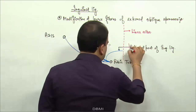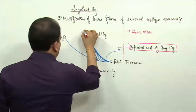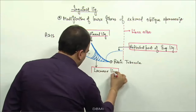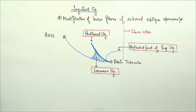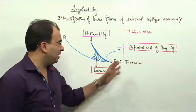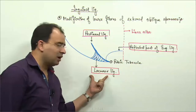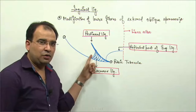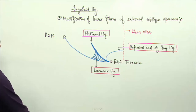So the three modifications we can appreciate are: the reflected part of the inguinal ligament, the pectineal ligament, and the lacunar ligament - the three modifications of the inguinal ligament. They are all related to some important structures, like the inguinal canal. Now the lacunar ligament is forming a medial relation for the femoral canal, or the femoral ring.